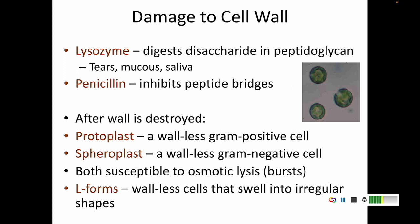Cell walls can be damaged by chemicals like lysozyme — found in tears, mucus, and saliva — which destroys the sugar part of peptidoglycan. Penicillin, a natural antibiotic, destroys the peptide part of the cell wall. Either way, the peptidoglycan is destroyed and the cell becomes susceptible to osmotic lysis. A gram-positive cell that has lost its cell wall is called a protoplast. A gram-negative cell that has lost its cell wall is a spheroplast. Both can fill with water and burst. An L-form is a cell that has lost its cell wall and has swollen into a weird shape.